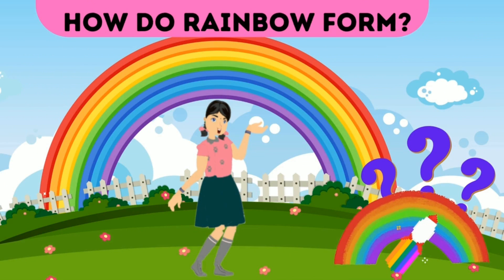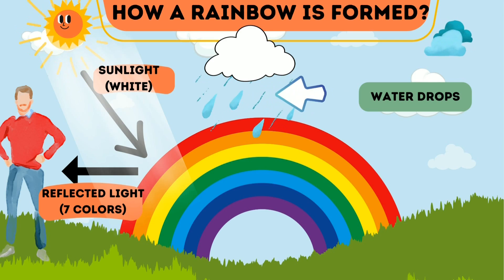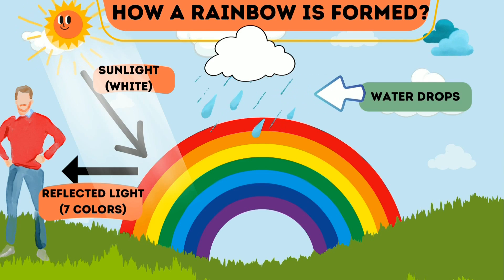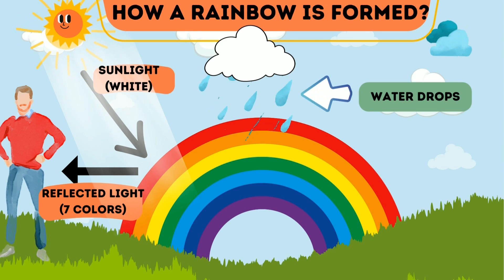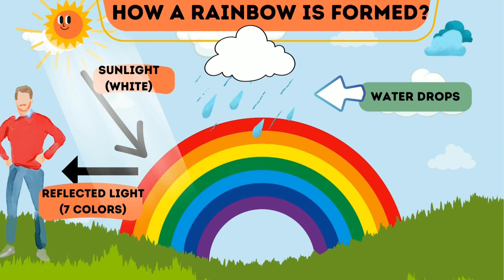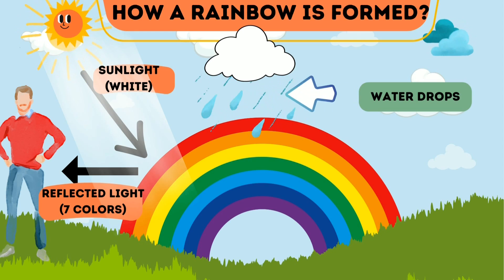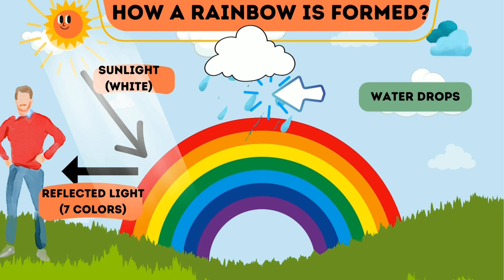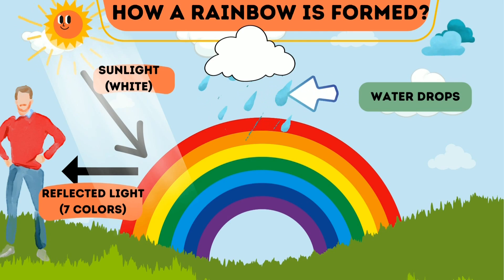Kids, do you know how your favorite rainbow forms? Let's see. A rainbow can form when both sunshine and water droplets are in the sky. Sunlight is white light, which is a mixture of all visible colors. As sunlight passes through the water droplets, it is bent and split into several colors. These are the seven colors of the rainbow.